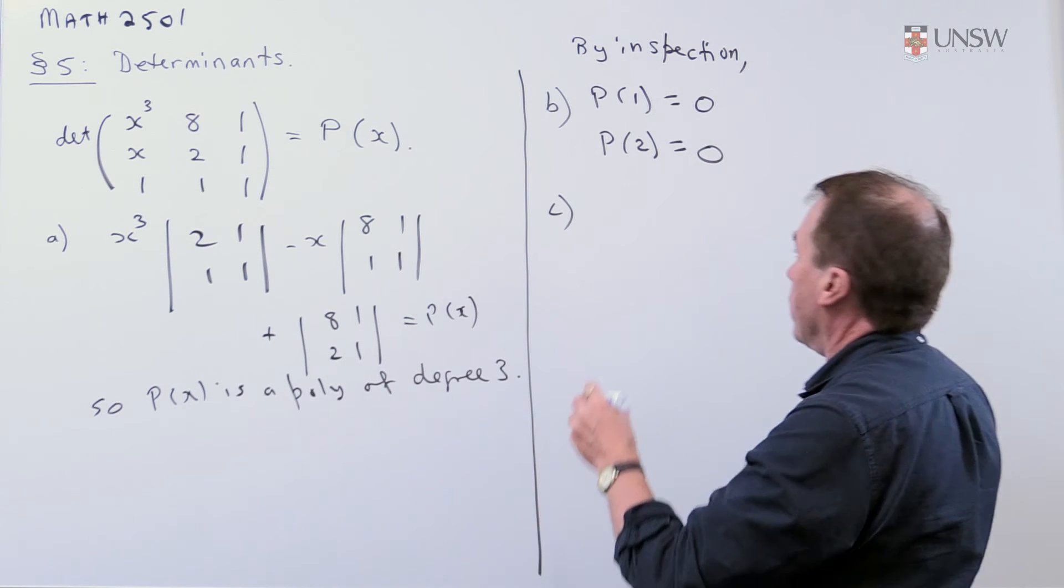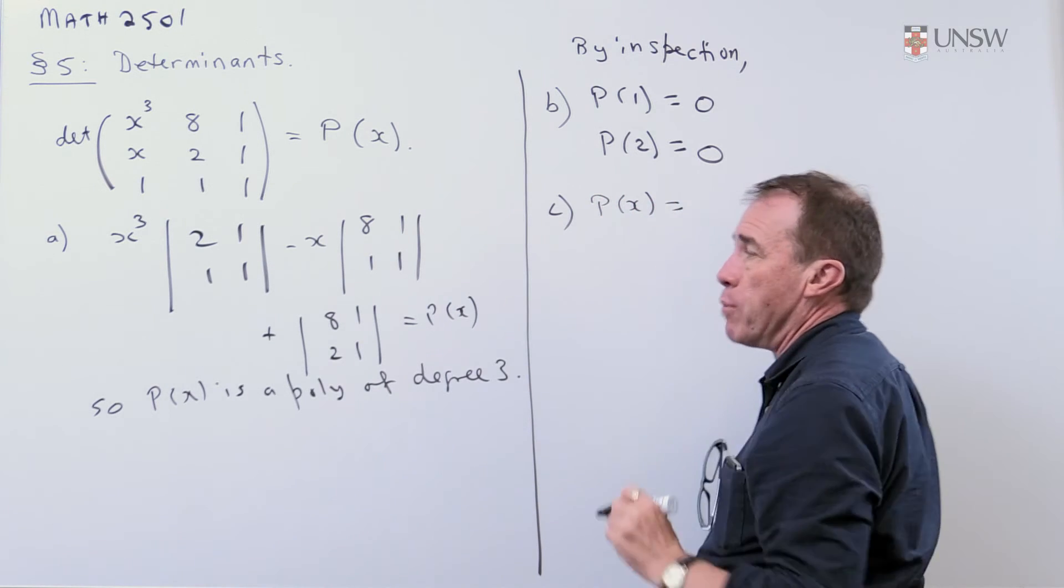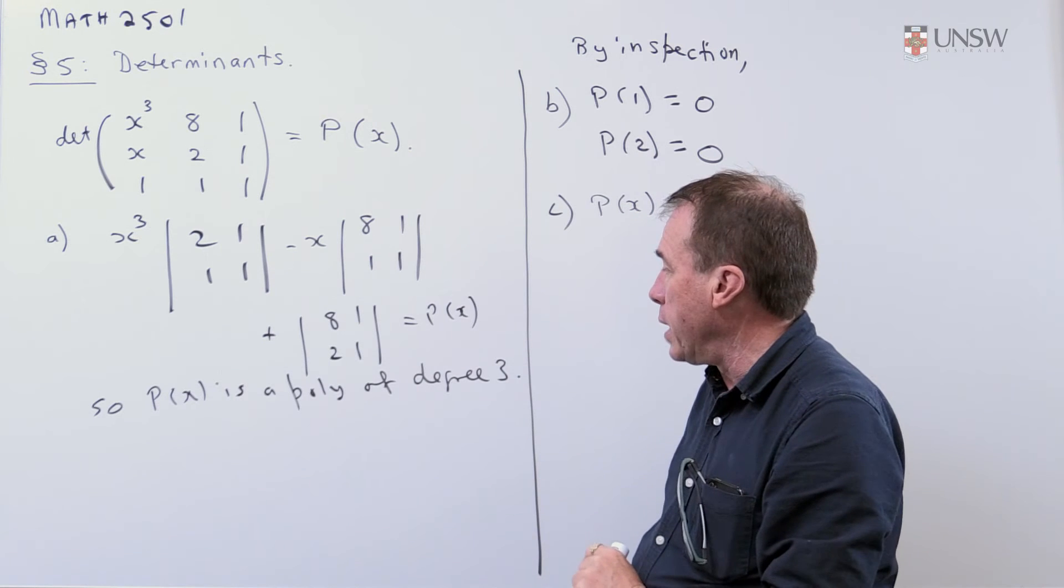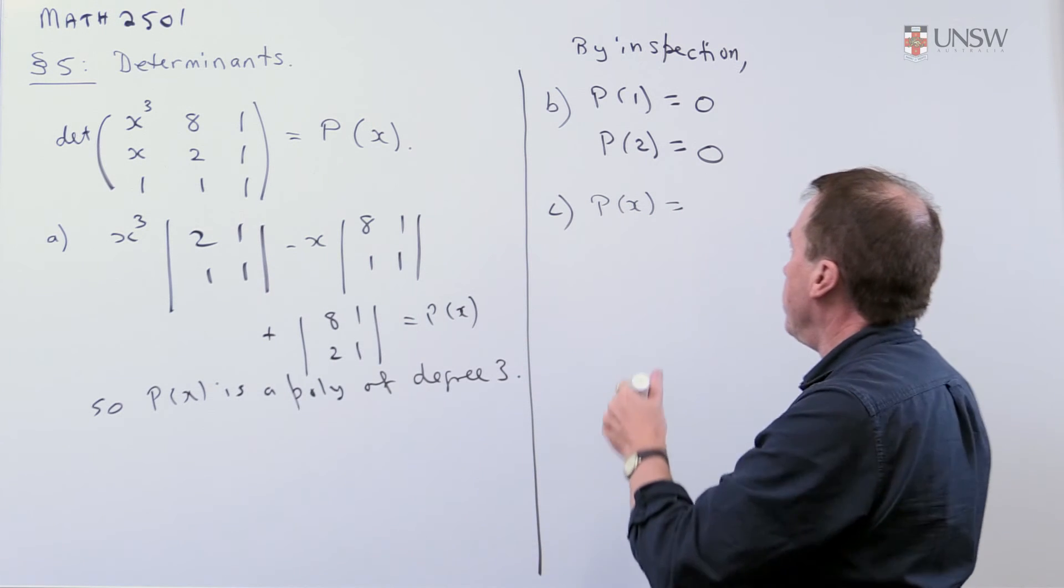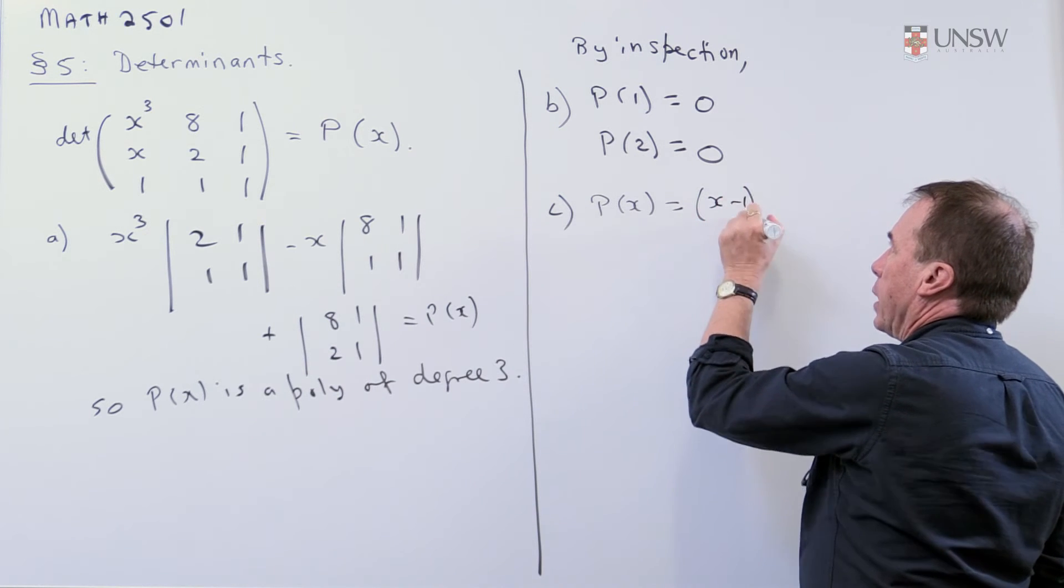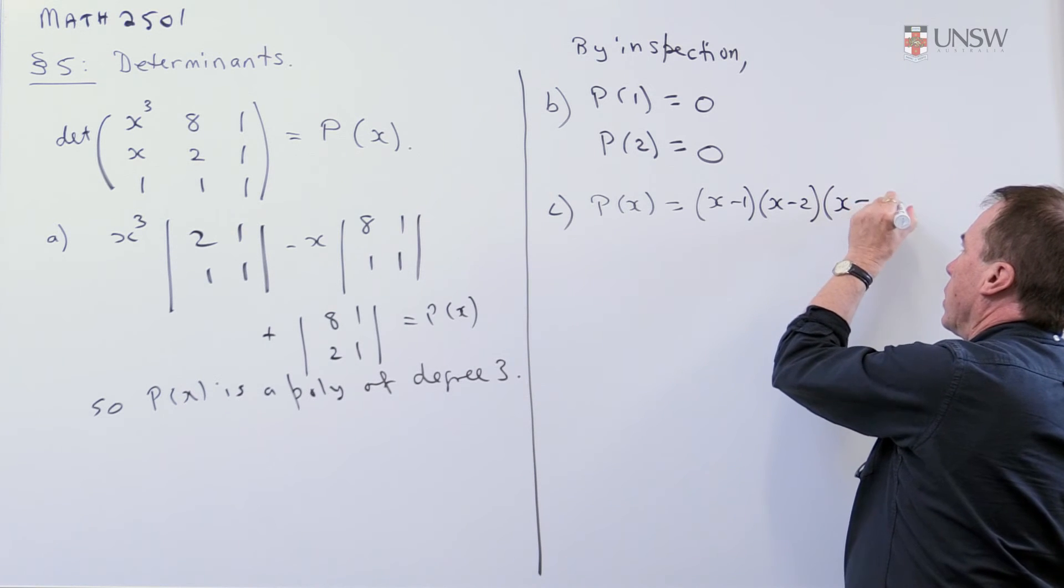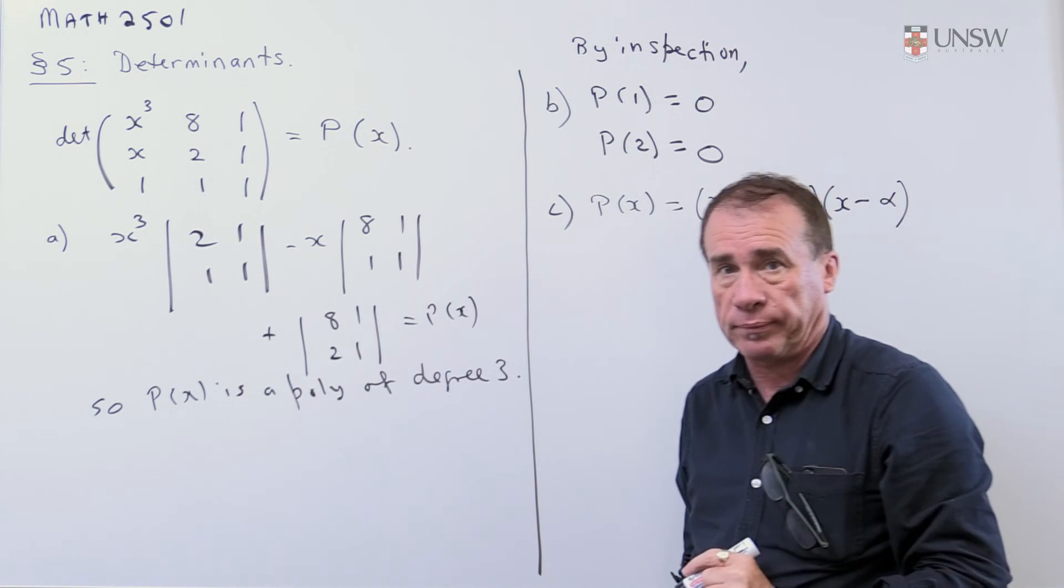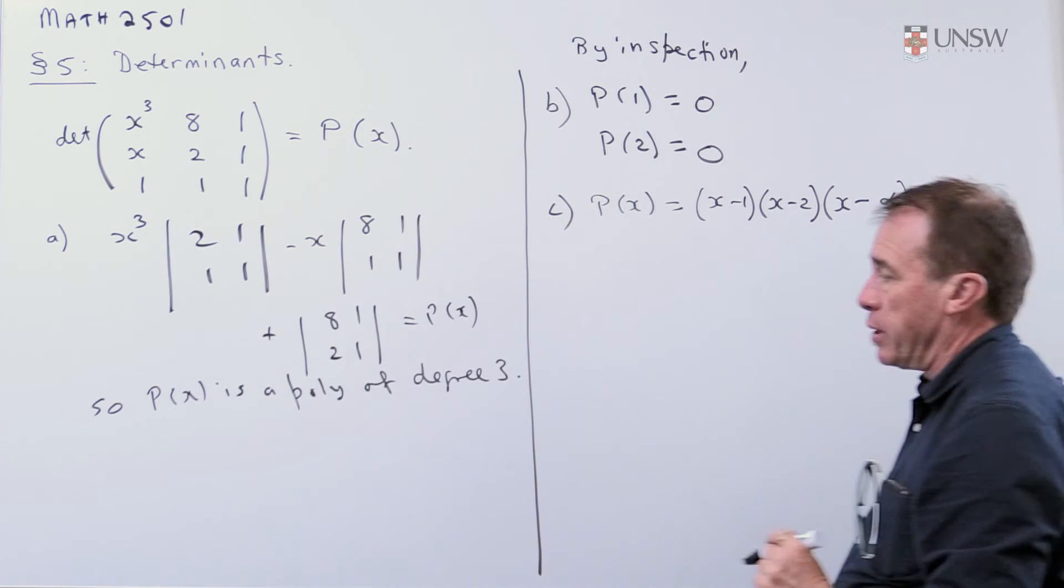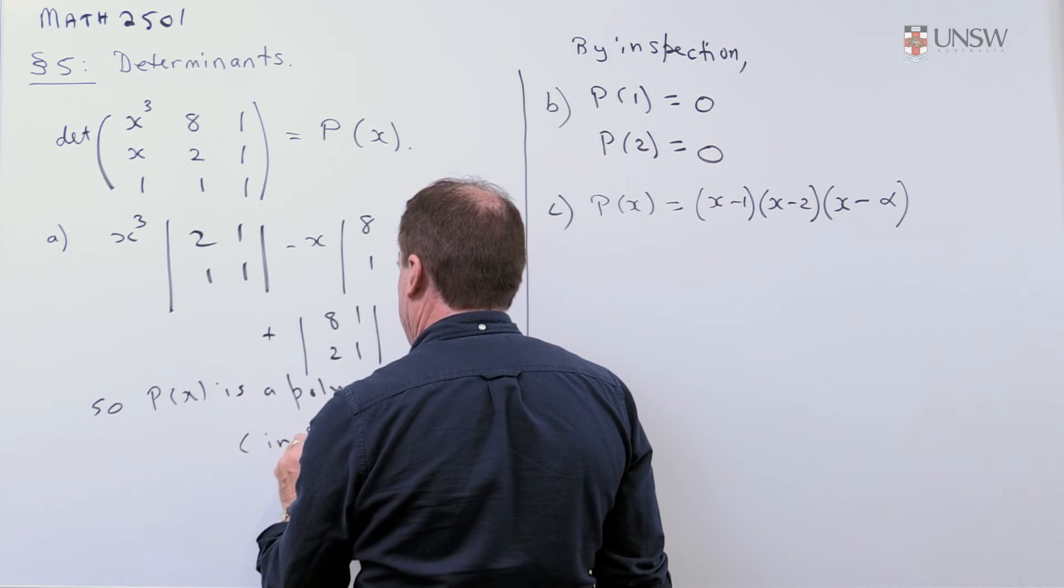So, I'll factorize the polynomial, so my P(x) then, by the way, it's going to be a monic polynomial, because the determinant of that one is 1, so it's only going to be 1x cubed. So the polynomial must be (x minus 1) times (x minus 2) times (x minus, well, I might just call it alpha) for the third part. It's a monic polynomial.